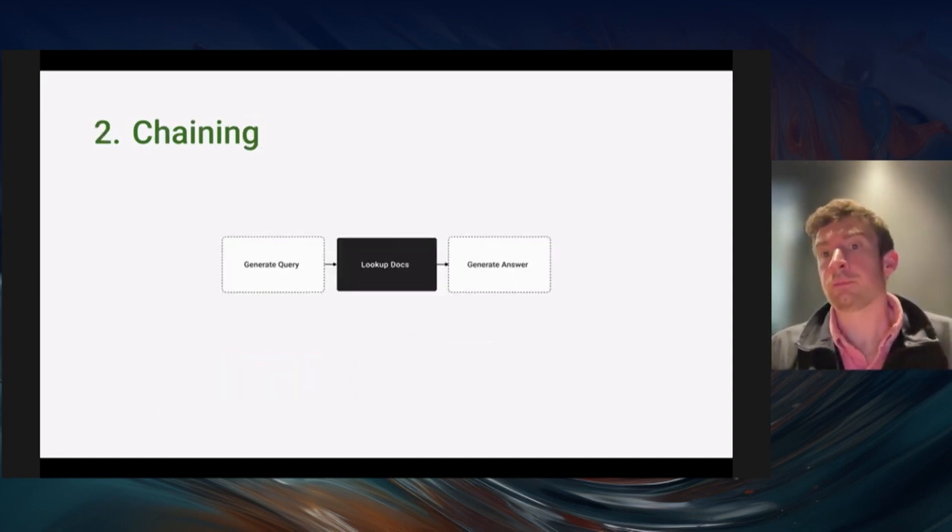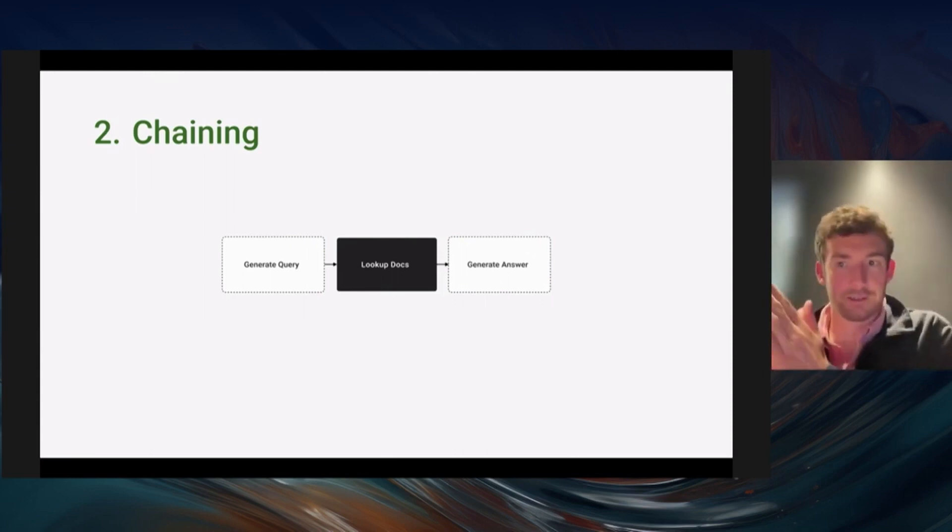The next level up is chaining. Combining multiple of these LLM calls or an LLM call to an action to another LLM call, and using that to generate its answer. Still very deterministic. You know exactly what you're going to do. You're going to do this, then this, then this, and you proceed along that.